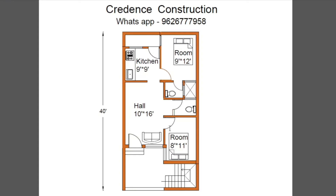Next is the common bathroom, size is 4 feet by 7 feet. We will place a western closet in this room. Next is the master bedroom, size is 9 feet by 12 feet. This room has an attached bathroom.